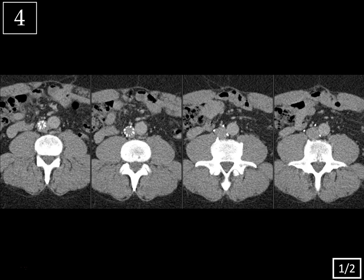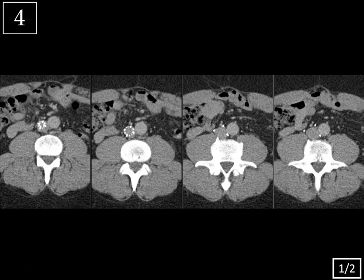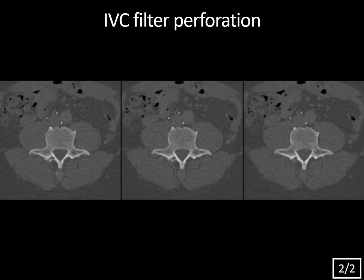Case 4, these are images of the mid-abdomen with contrast CT, slide 2 of 2 with bone windows. So we're looking at multiple images of an IVC filter, here it is right here in the IVC. As we move inferiorly, notice that the struts extend beyond the lumen of the IVC. Here you can see these two struts are surrounded by retroperitoneal fat — so this is an example of IVC filter perforation. And here on the bone windows, you can actually see that one of these struts, the posterior-most strut, is partially embedded in the cortex of the vertebral body here.